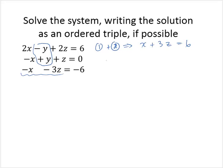Adding equations 1 and 2 together yields x plus 3z equals 6. Let me take equation 3 and rewrite it: negative x minus 3z equals negative 6. Now notice that if I add these, I'll get an elimination. I would get 0x, but I also get 0z, and the right hand side is 0.